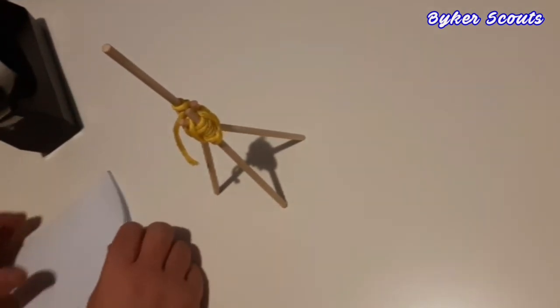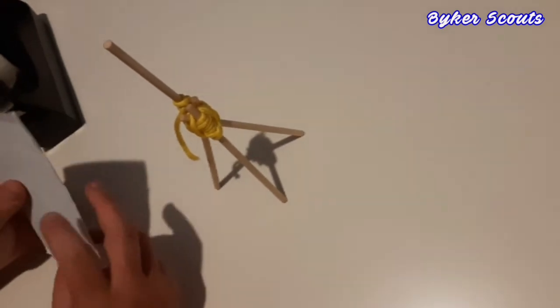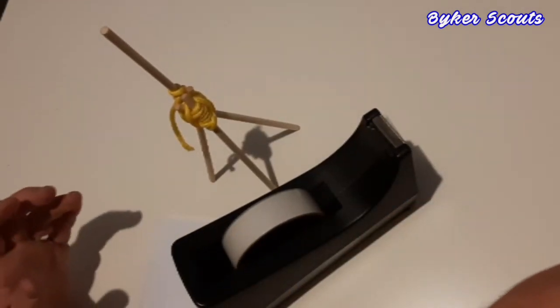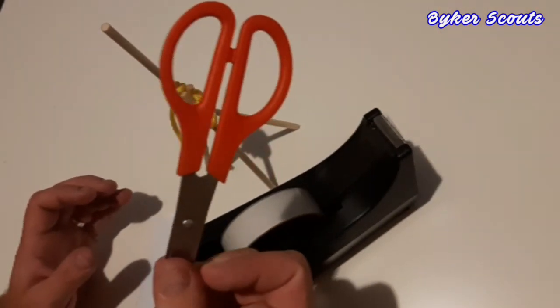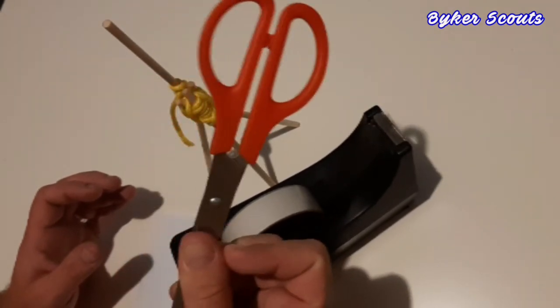And the next step is to make the actual flag. So to make the actual flag, we've got some paper, we've got some sellotape, and we've got some scissors, but be very careful with scissors.